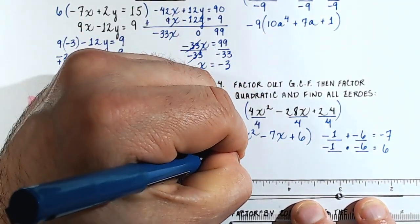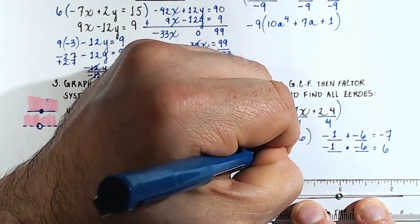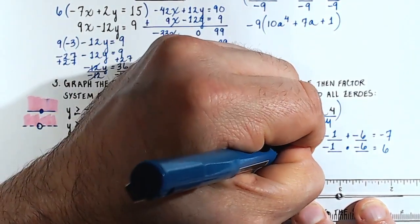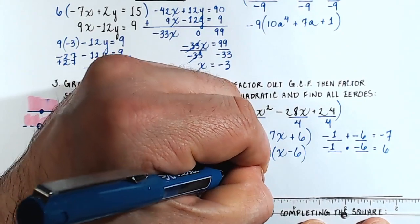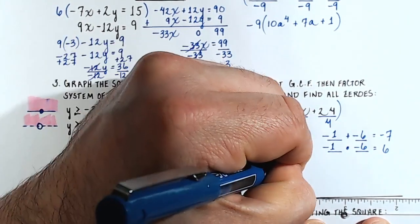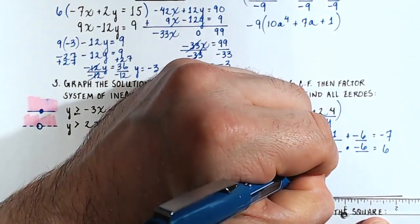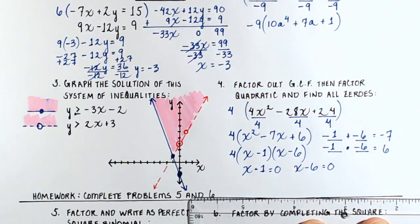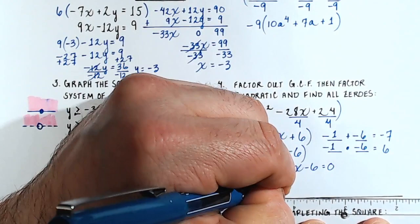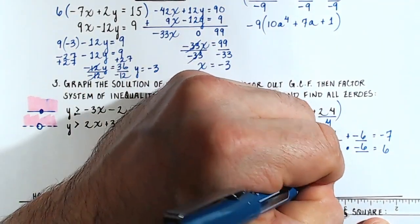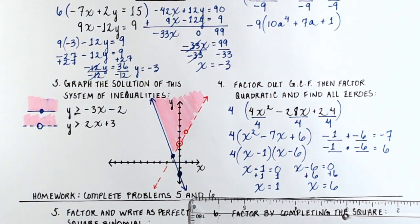So I write 4 times open parenthesis x minus 1, close parenthesis, times open parenthesis x minus 6, close parenthesis. To find the zeros, I set each factor equal to 0. x minus 1 equals 0 gives x equals 1. x minus 6 equals 0 gives x equals 6. So the two zeros are 1 and 6.